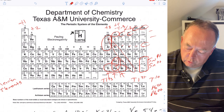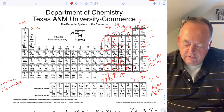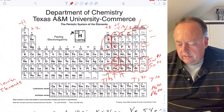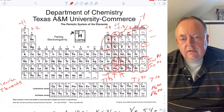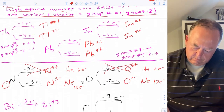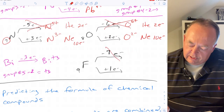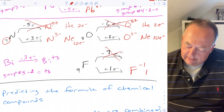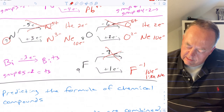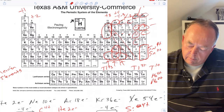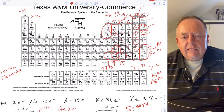Now group seven: if group five wants to be negative three and group six wants to be negative two, then group seven wants to be negative one. If fluorine gains one electron it looks like neon with ten electrons — it doesn't want to lose seven. It would rather gain one and be F⁻. So all of the halogens — fluorine, chlorine, bromine, iodine — like to be negative one charged.